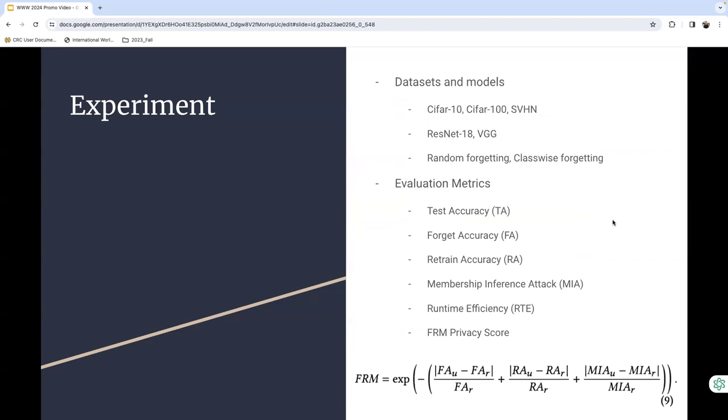In this section, we conduct extensive experiments to validate the effectiveness of CONMU. Our experiments mainly focus on image classification for CIFAR-10 on ResNet-18 under two unlearning scenarios. Besides, additional experiments are conducted on CIFAR-100 and the SVHN dataset using VGG-16.